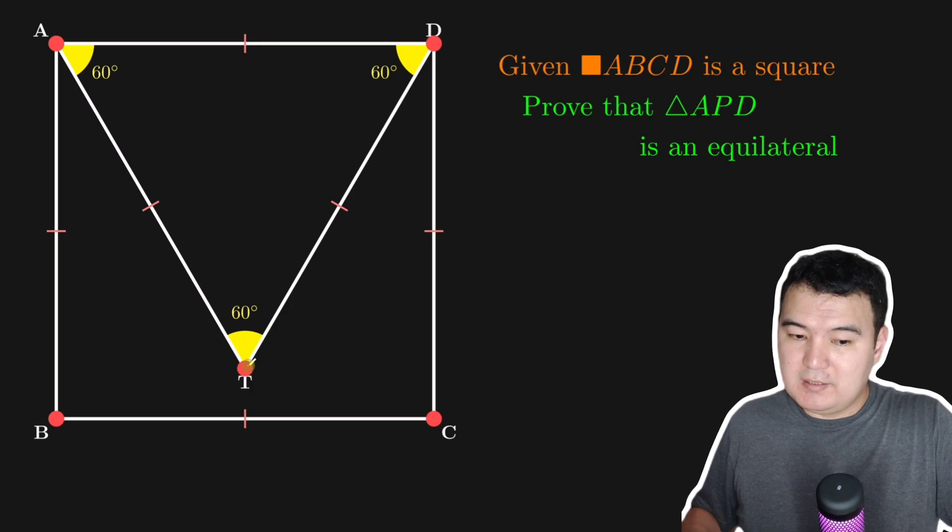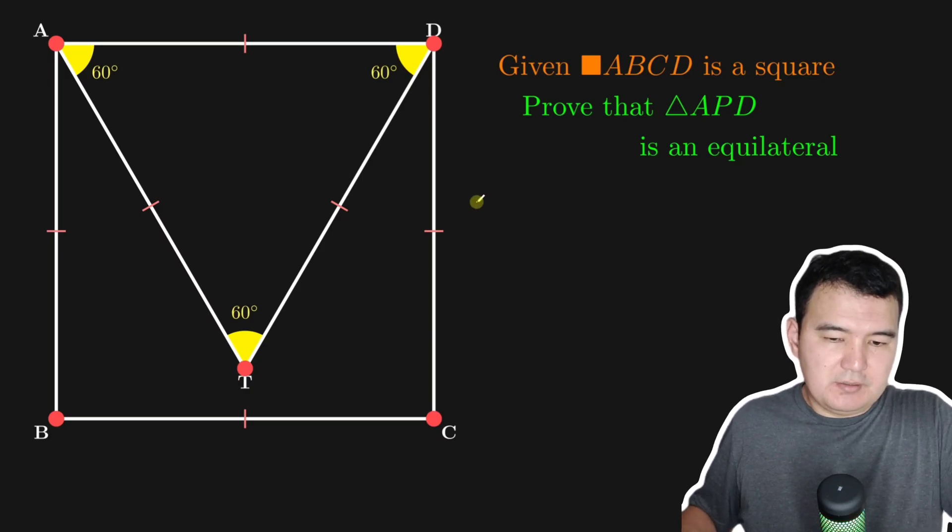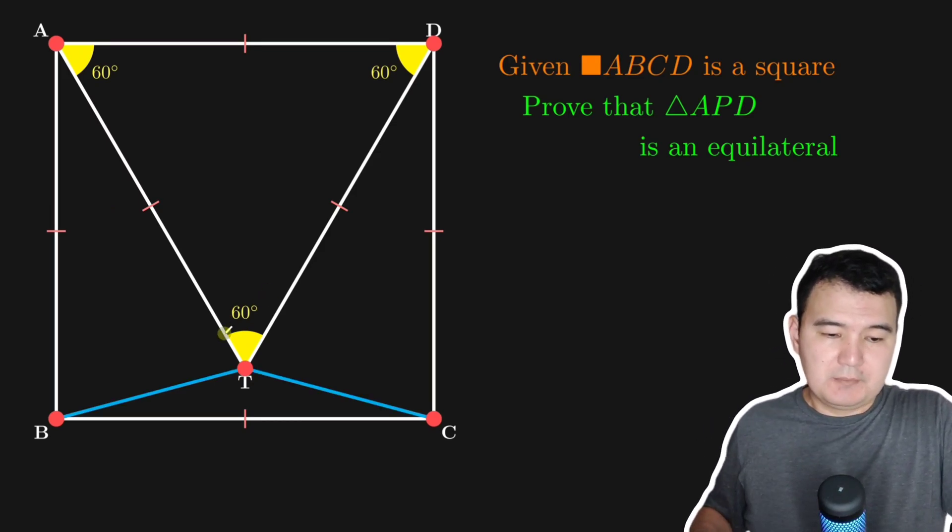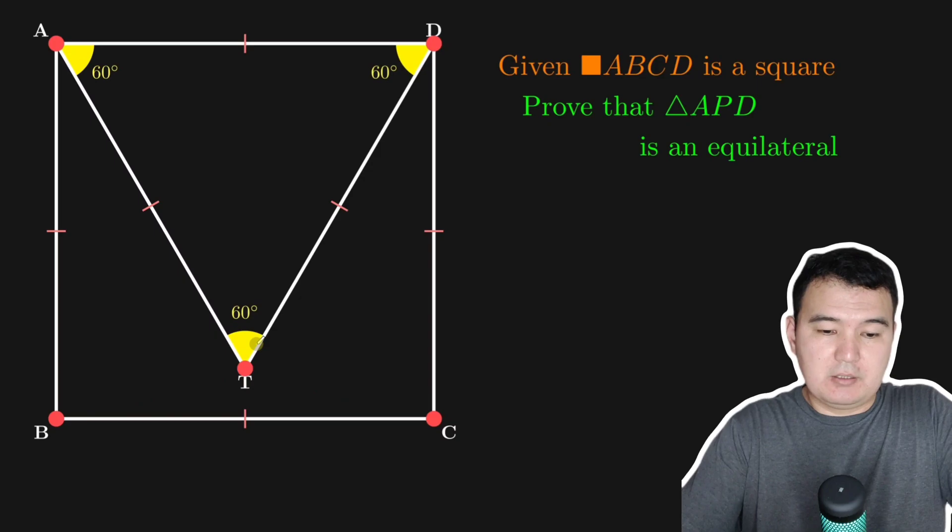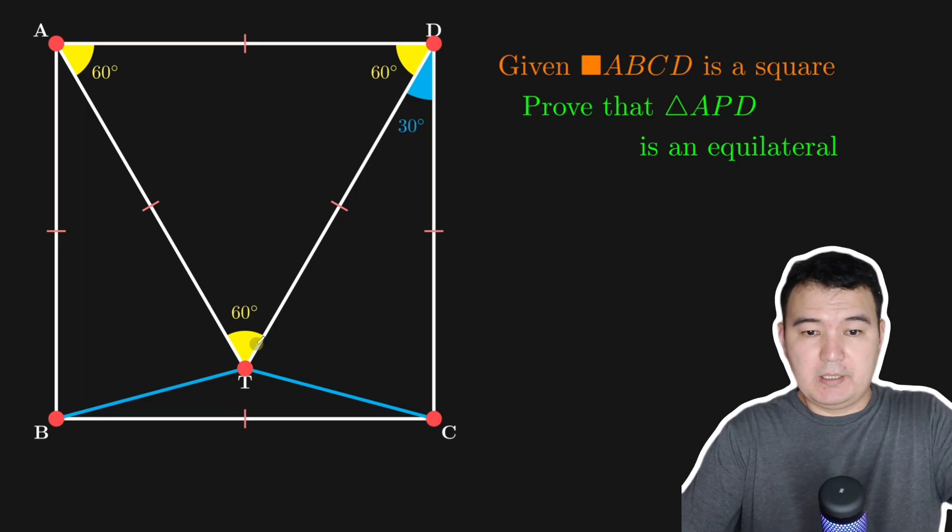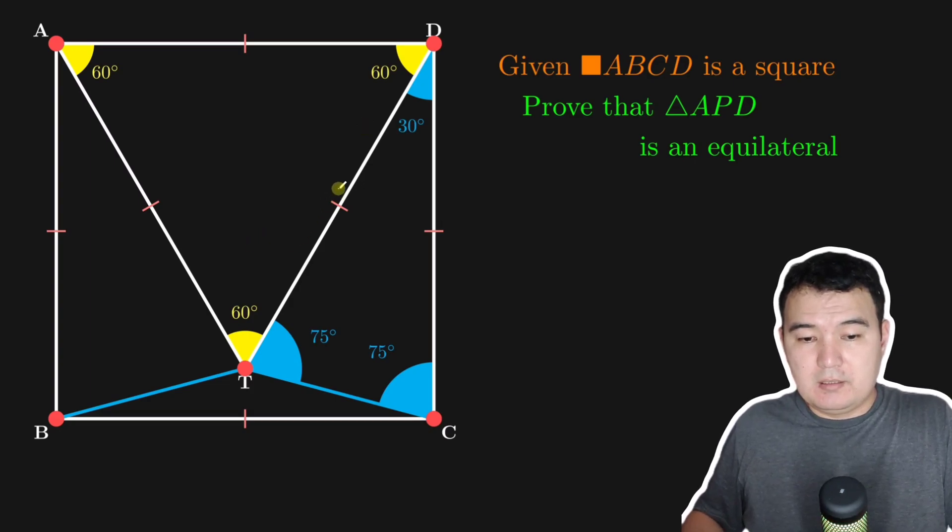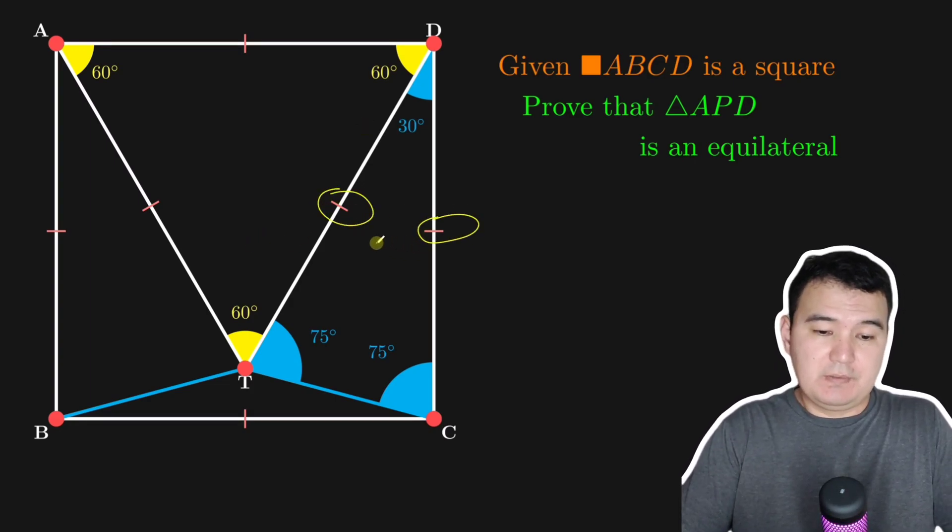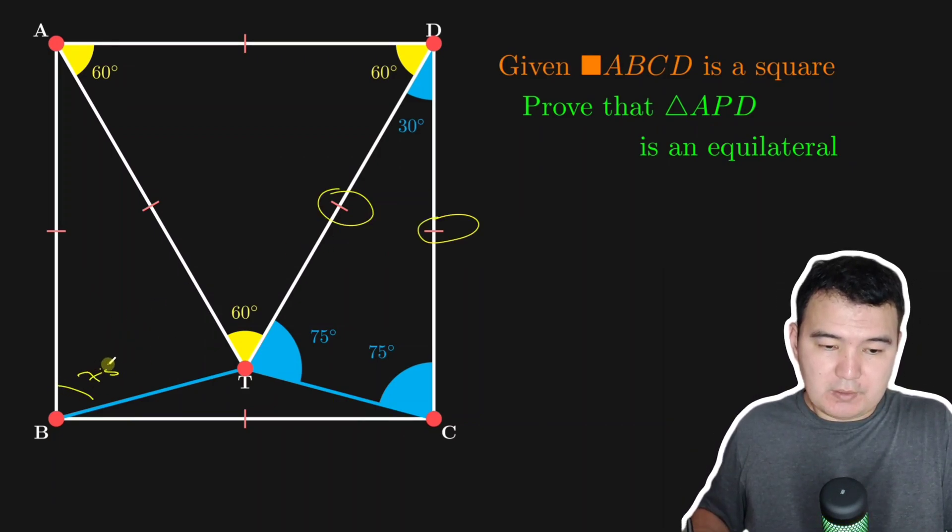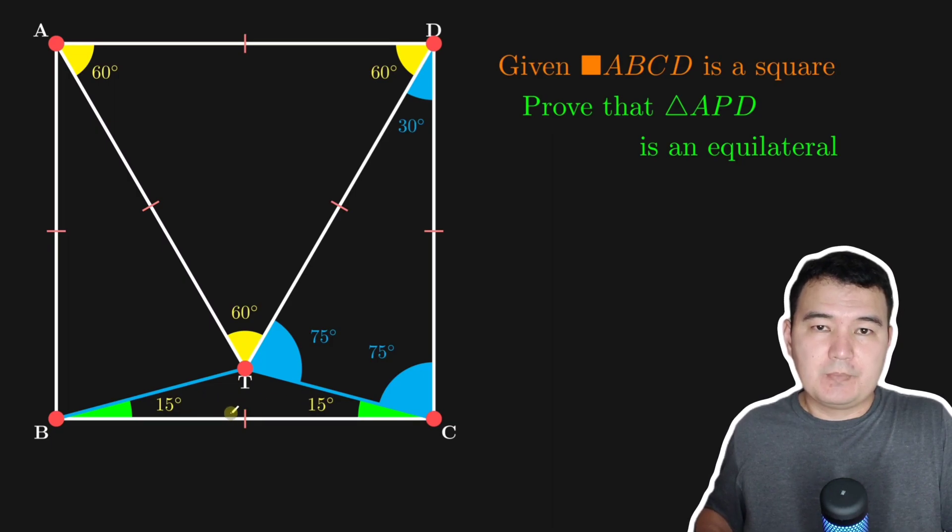So that's T. This is a different point, not the point P we had. So we had these three sides equal and then this is a square. So what does this give us? So let's connect these two. Let's connect T with B and C and then compute some, find some angles. So we have 60 degrees over here. Since this is an isosceles triangle, we have 75 and 75. The same way, exactly same way we have 75 over here. And that gives us two 15 degrees here. Right?